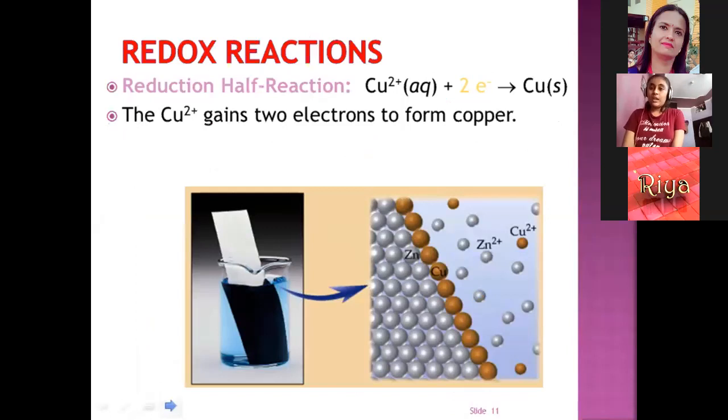Reduction half-reaction. Here, the reaction is Cu 2 plus plus 2 electrons gives Cu. As we can see in the below diagram, Cu2 plus gains 2 electrons to form copper.